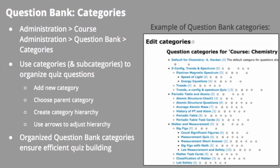Creating a hierarchy of question bank categories is similar to creating a computer folder organization system to easily locate files on your computer. When viewing the categories, new categories can be created, placed in the correct parent category, and moved around if needed. Using organized question bank categories makes quiz building more efficient in your Moodle course, as well as more efficient for sharing questions between courses.